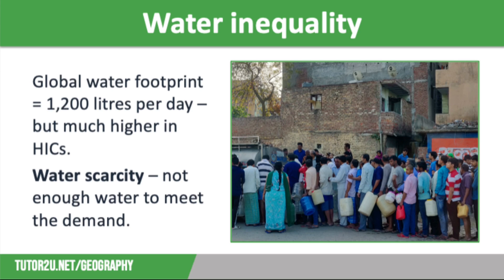Moving on to water: the global water footprint is around 1,200 litres per day. This includes water we use directly, along with the water that goes into producing all the food, goods, and energy we use daily. For example, it takes 40 litres of water to make one slice of bread and 70 litres to produce one apple. This figure is much higher in high-income countries — for example, the USA's water footprint is double this at almost 2,500 litres.